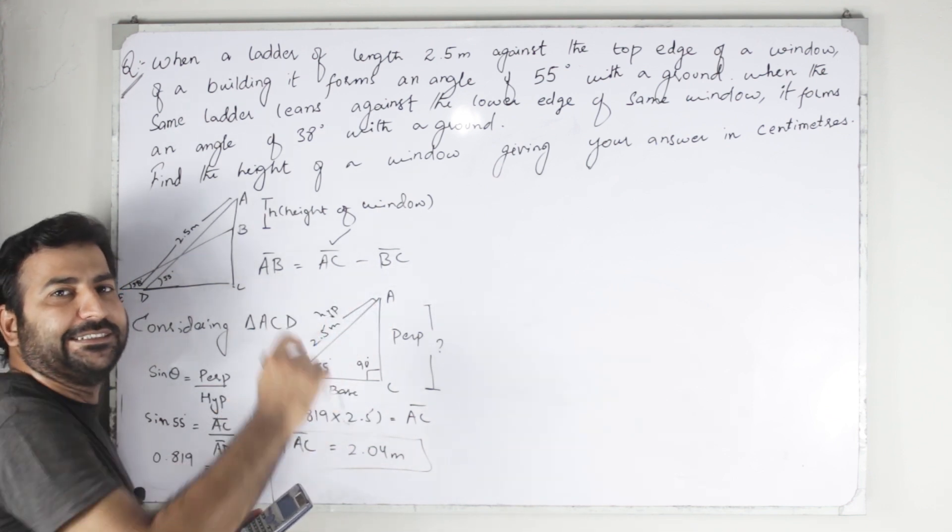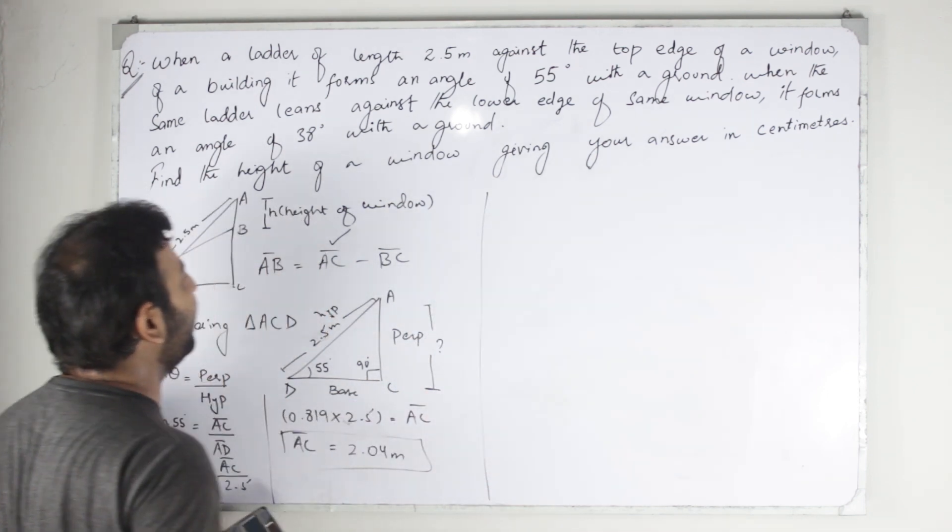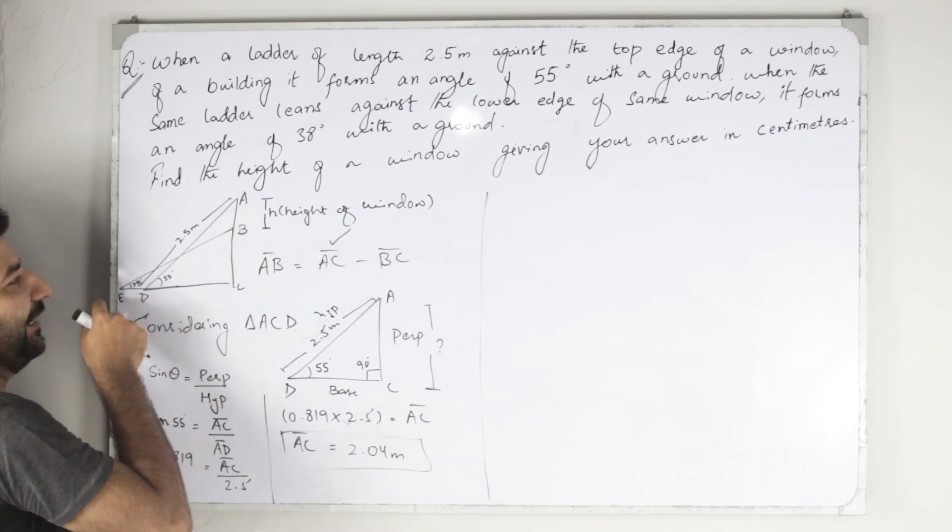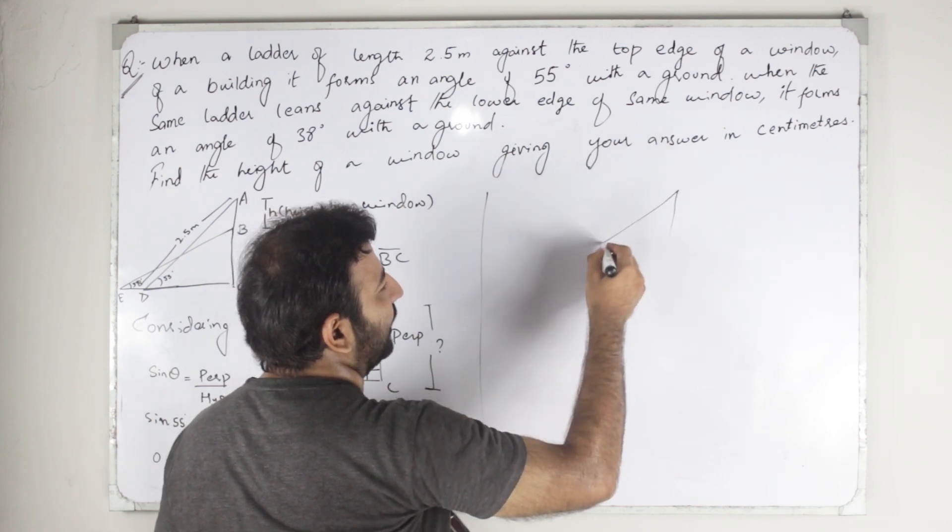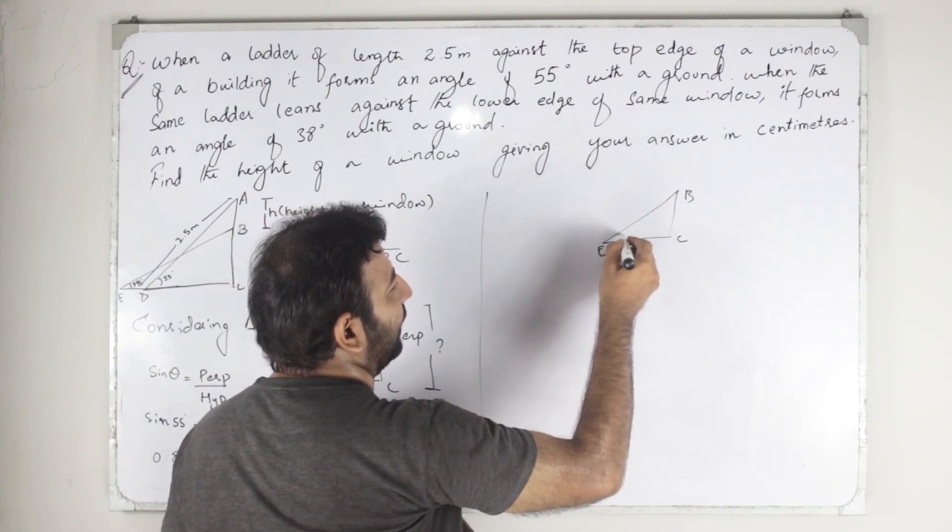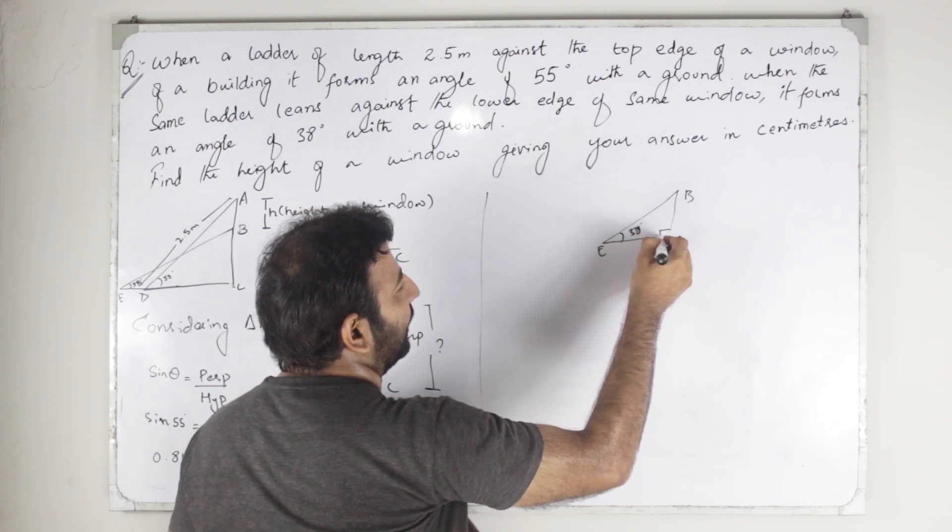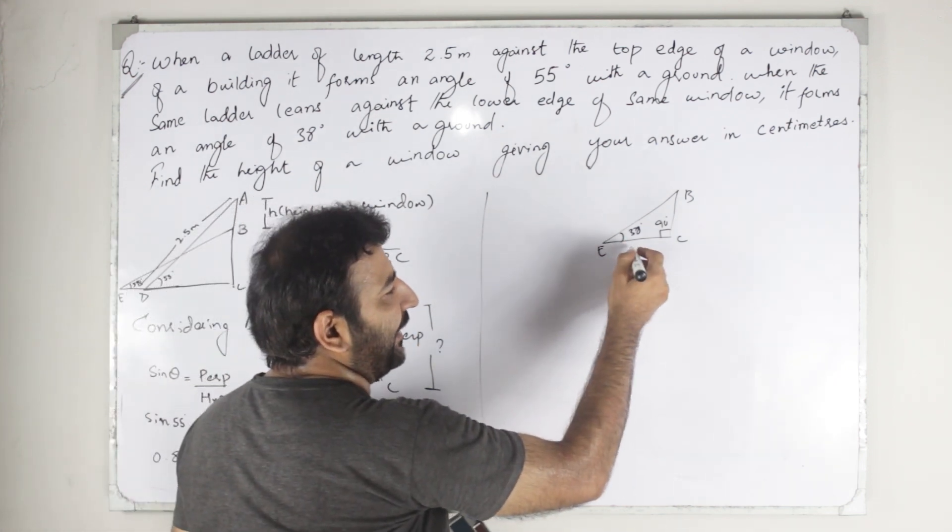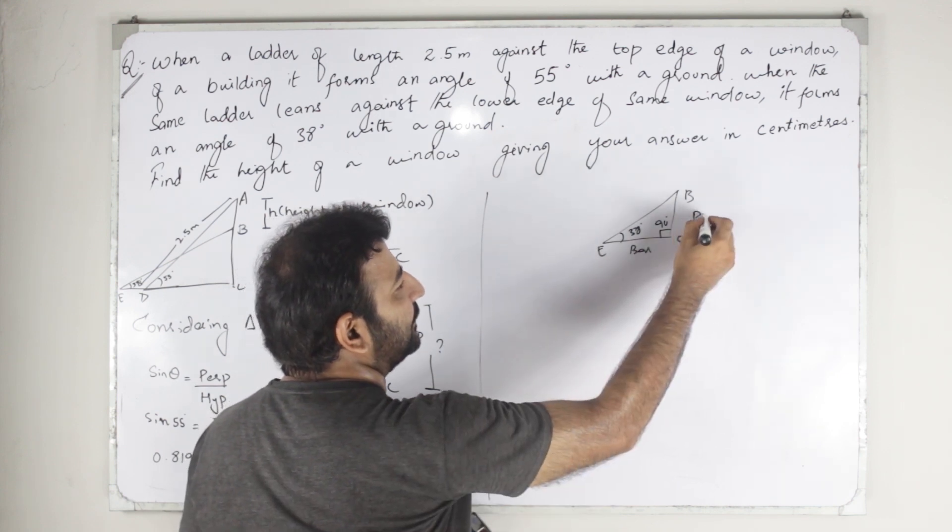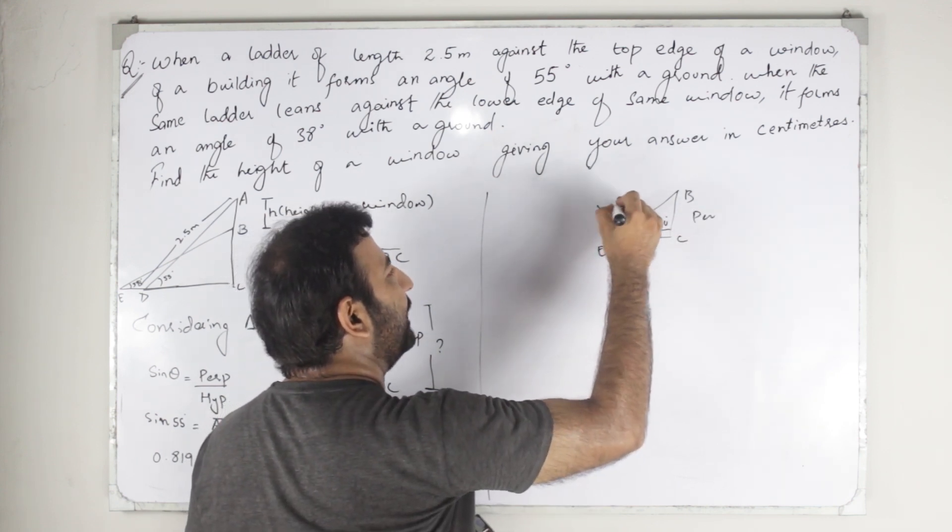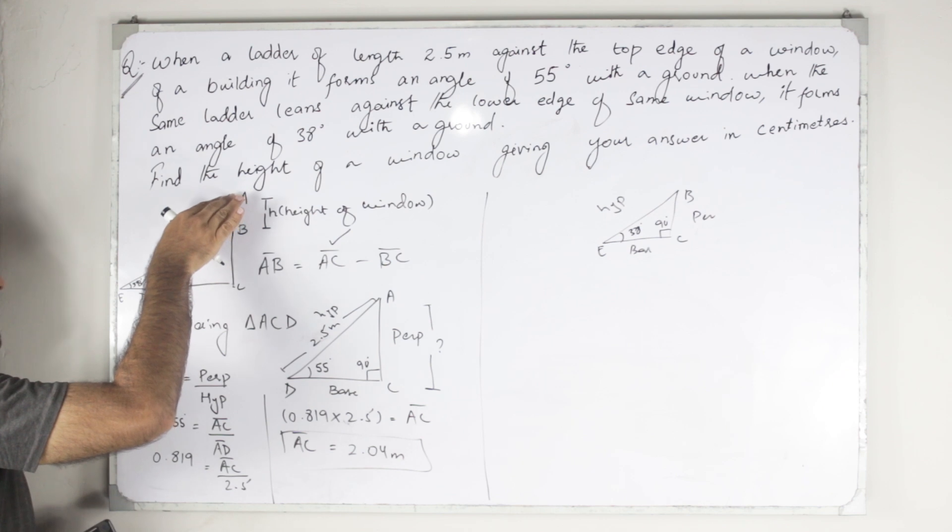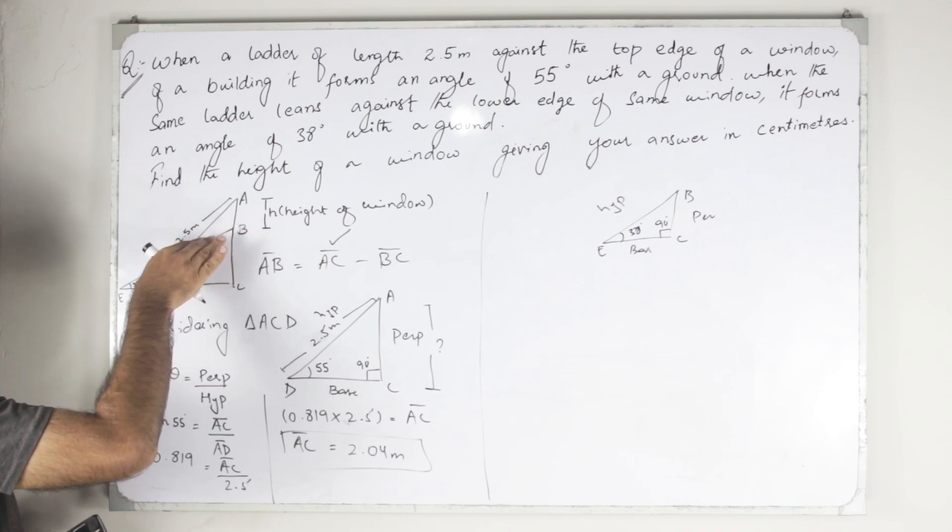Now we are moving towards BC. As you can see, BC is in another right triangle, that is BCE. The angle is 38 degrees, this one is 90 degrees. The adjacent side of the triangle is base, that is perpendicular, and opposite to 90 degrees is hypotenuse.